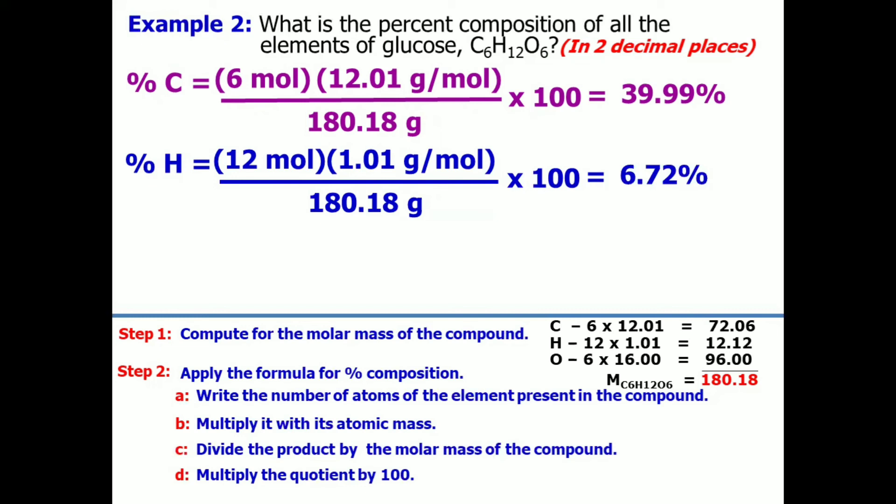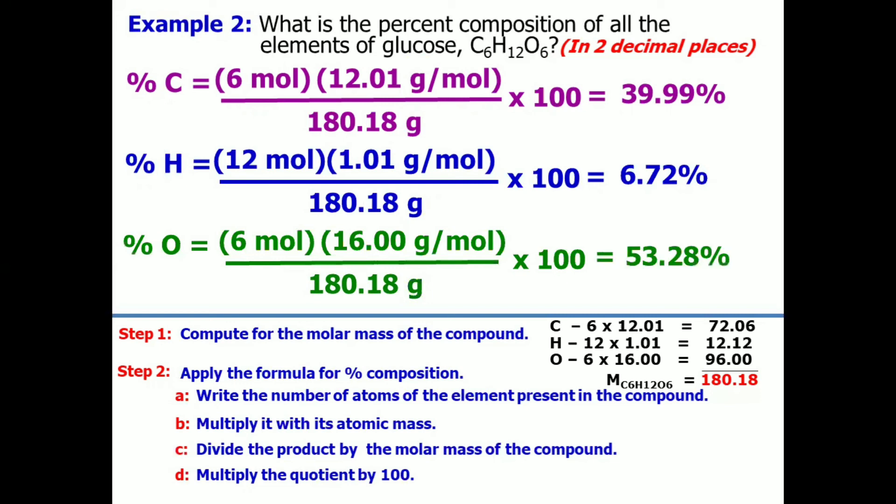And lastly, oxygen. Based on the formula, we have 6 moles of oxygen. Then, multiply it with its atomic mass, 16 grams per mole, and then divide it by 180.18 grams, which is the molar mass of glucose. Then, times 100, and the result is, you are correct, 53.28%.